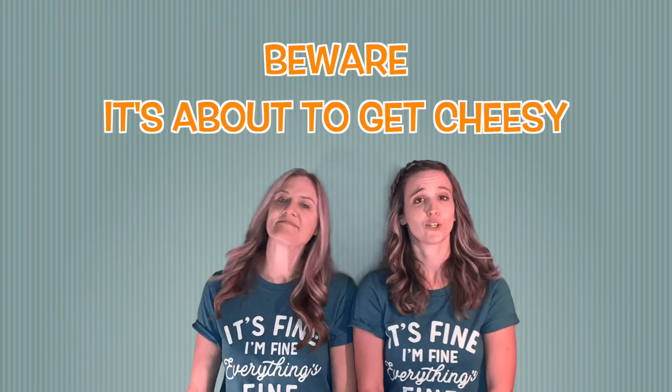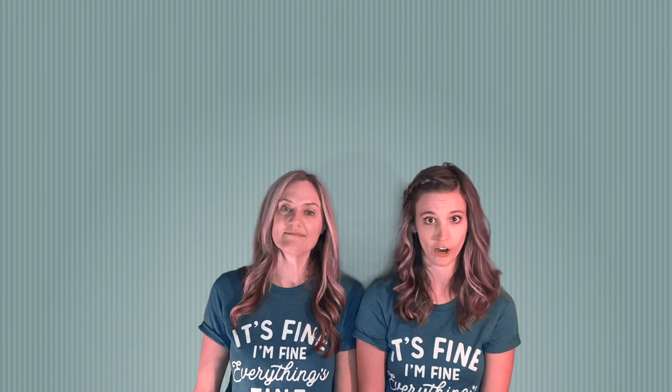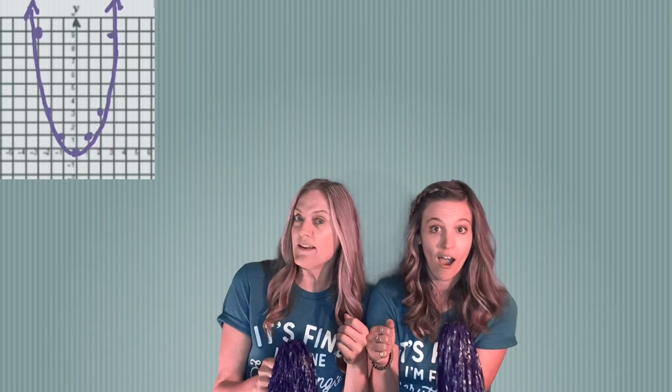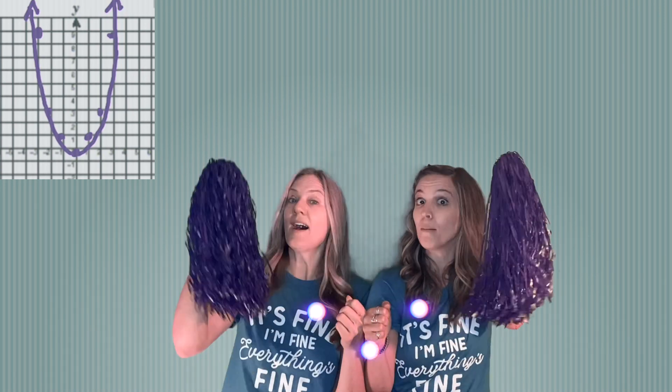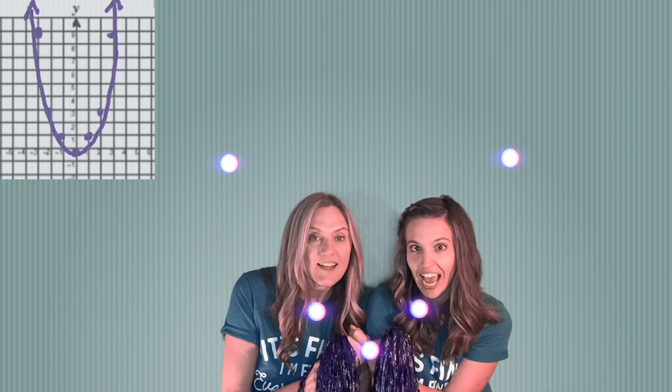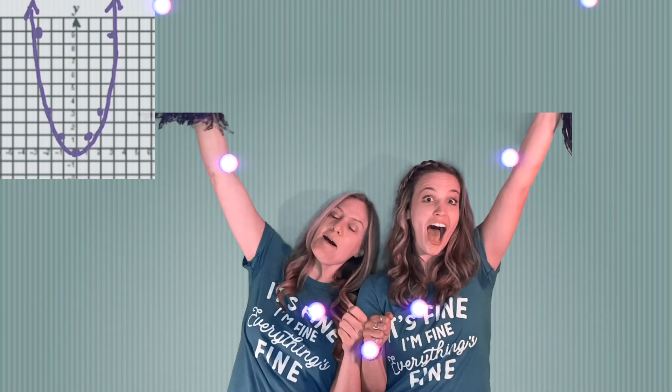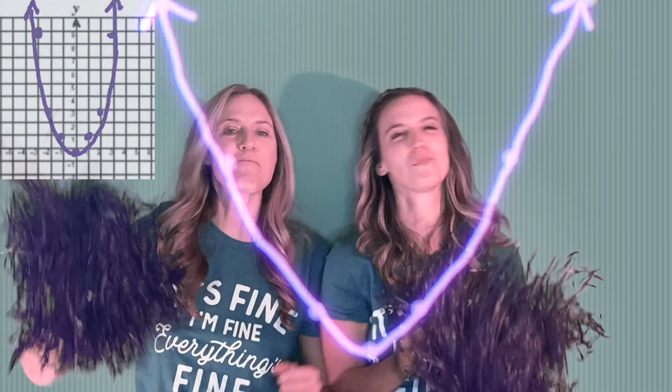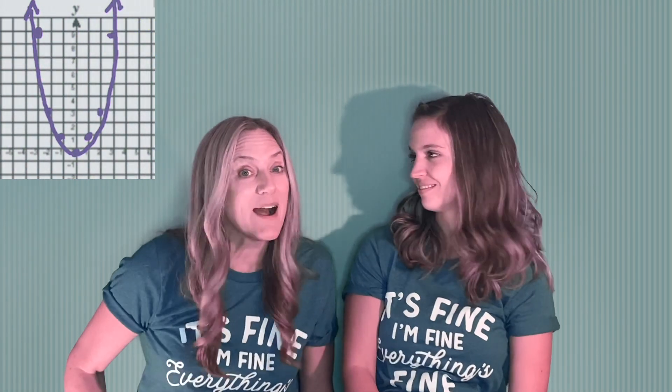Let's recap. To graph a quadratic, we first start at the vertex. Then we go over one, up one, back to the vertex, over two, up four, back to the vertex, over three, up nine. Woo! Bravo! Team Quadratics!